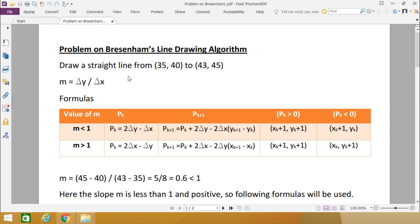Here we are going to solve one problem using Bresenham's line drawing algorithm. Draw a straight line from (35, 40) to (43, 45). The coordinates are given and we are supposed to draw one line using Bresenham's line drawing algorithm.